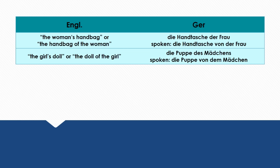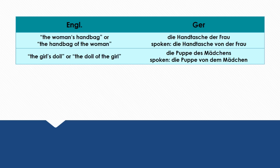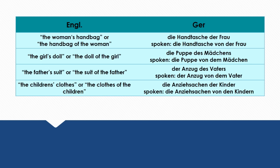Next example: 'the girl's doll' or 'the doll of the girl.' In German: 'die Puppe des Mädchens,' or in colloquial speech, 'die Puppe von dem Mädchen.' Next example: 'the father's suit' or 'the suit of the father.' In German: 'der Anzug des Vaters,' or colloquially, 'der Anzug von dem Vater.' Next example: 'the children's clothes' or 'the clothes of the children.' In German: 'die Anziehsachen der Kinder,' or colloquially, 'die Anziehsachen von den Kindern.'